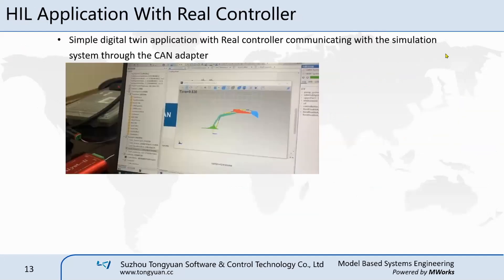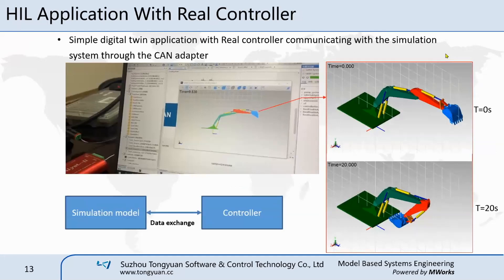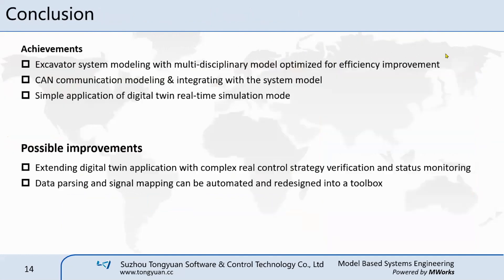The final appearance of the system works like this: the adapter and the controller work on the same CAN network and the virtual system is exchanging data with the real controller. The mechanical parts are driven by real signals and sending feedbacks at the same frequency as the network. The whole system works as a simple digital twin application. To conclude, we have successfully modeled the excavator system multidisciplinary model and optimized it for efficiency improvement. We also modeled the CAN communication mechanism and integrated it with the system model. Finally, the application of digital twin is achieved and conducted under a real-time environment.